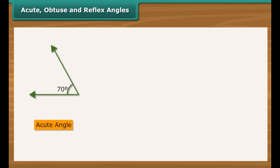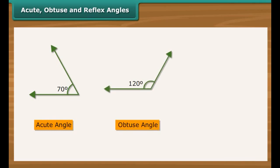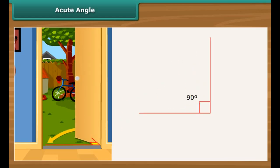There are 3 more angles: acute angle, obtuse angle, and reflex angle. Acute angle: Look at a picture of an open door. The door makes a 90-degree angle with the ground. Now shut the door slowly — the angle it makes with the ground becomes less than 90 degrees. Angles that measure less than 90 degrees are called acute angles.